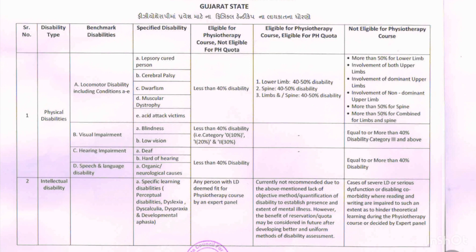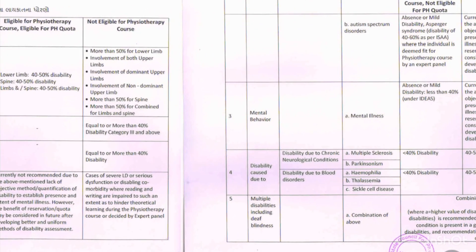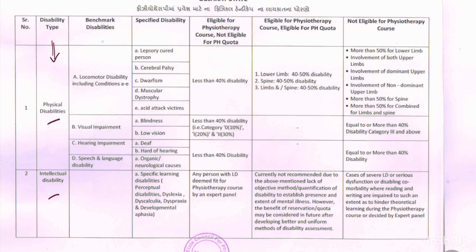This is the eligibility criteria of the Gujarat State Council for Physiotherapy — for Gujarat state, but it is also very similar in other states, so you can refer to this or visit the official physiotherapy website of that particular state. As you can see, in this column there are various disability types such as physical disability, intellectual disability, mental behavior disability, multiple disability including deaf and blindness. All these disabilities have a benchmark, and they have also mentioned specified disabilities.